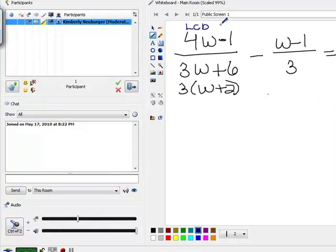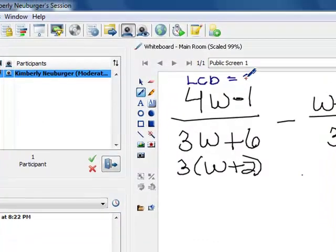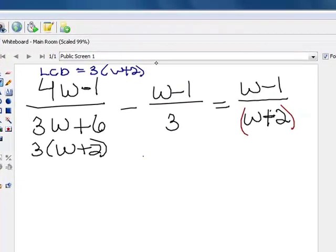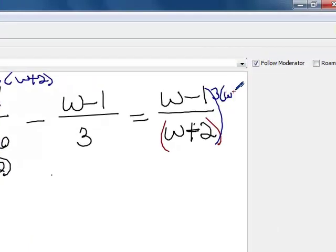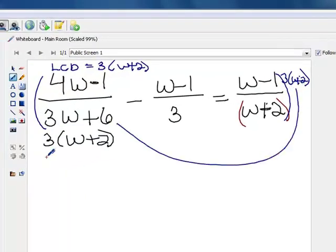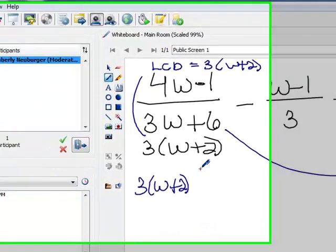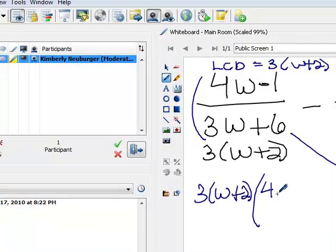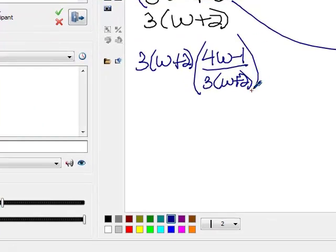Our LCD is 3 times w plus 2. So we're going to multiply this whole equation by 3 times w plus 2. We'll distribute it to this one over here, which will be 3 times w plus 2 times the 4w minus 1 over 3 times w plus 2. Remember, we leave the denominators factored, and then before I continue on,